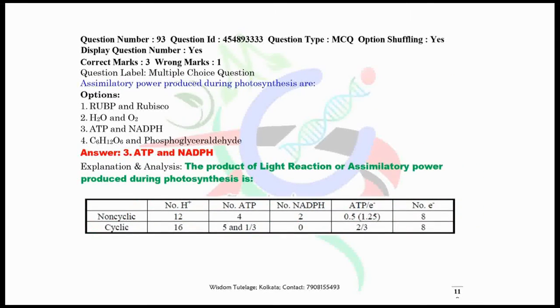Question number 93, assimilatory power produced during photosynthesis are ATP and NADPH. I have given here a tabular form of different types of requirements or production of light reaction of photosynthesis.